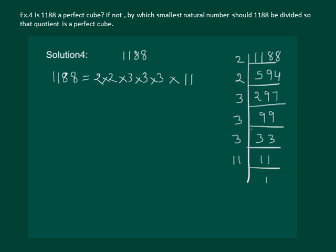Now let us see how many factors can be formed in the groups of 3. We can see only one factor gets formed in the group of 3 while 2 and 11 don't form a group of 3.